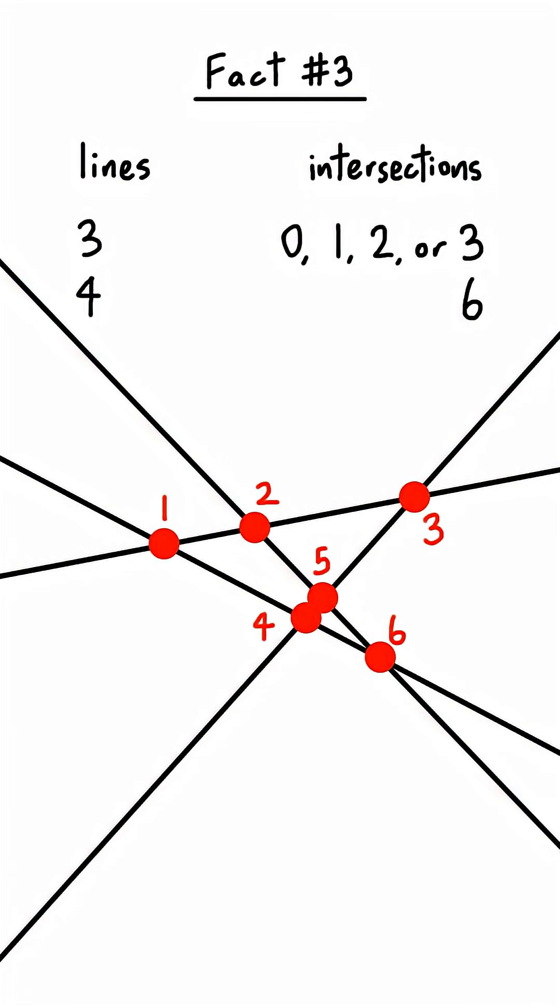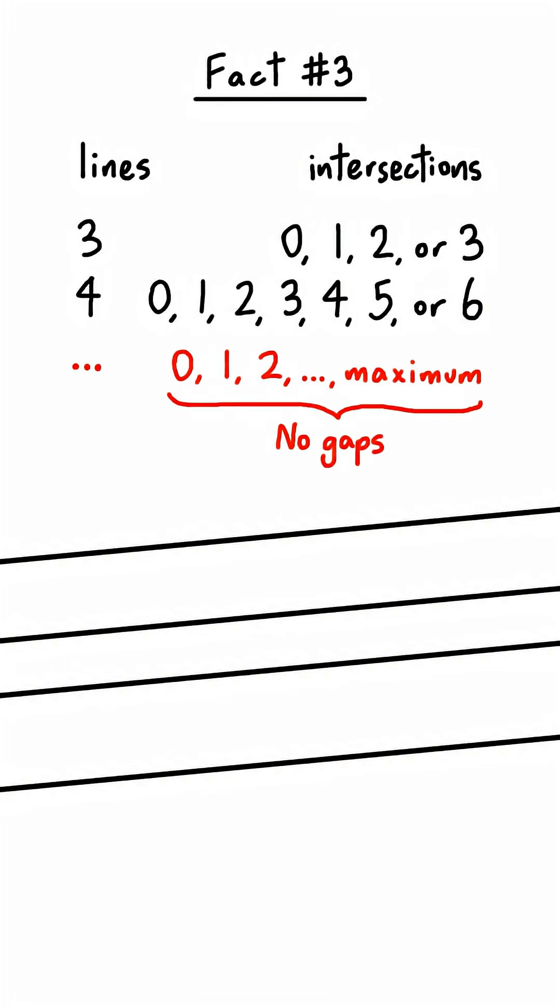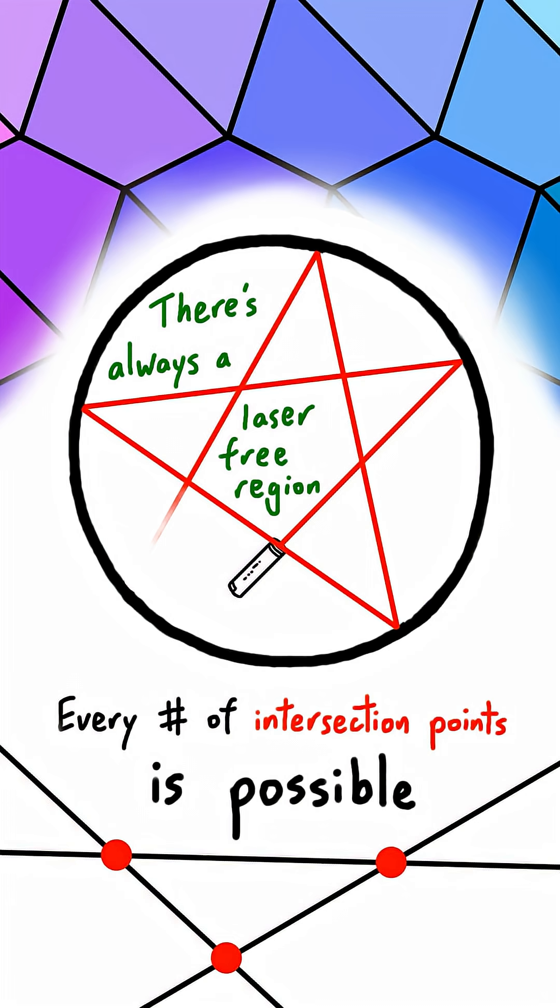Four lines have six maximum intersections, and again, every number less than six is also possible. This continues to be true for any amount of lines. Pause now to think about which fact is fake.